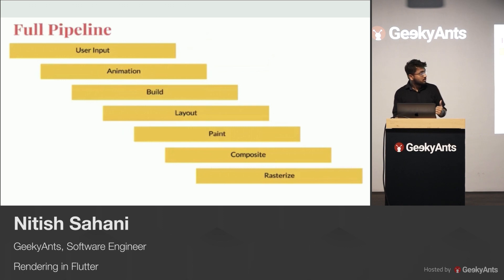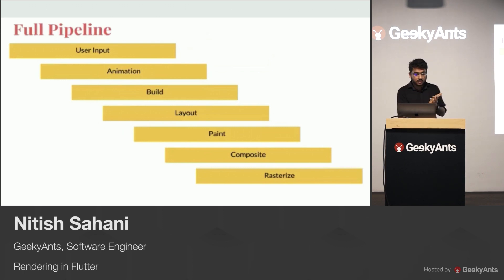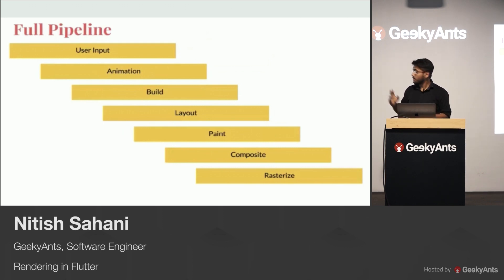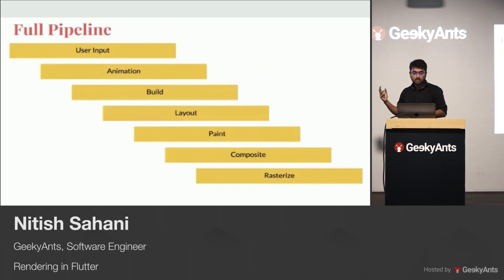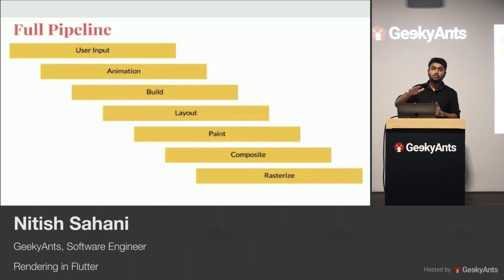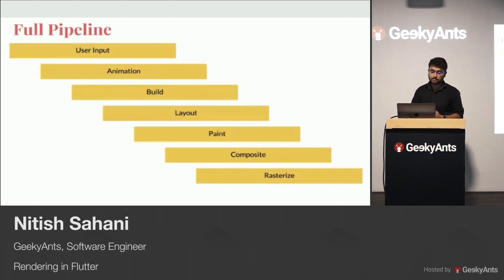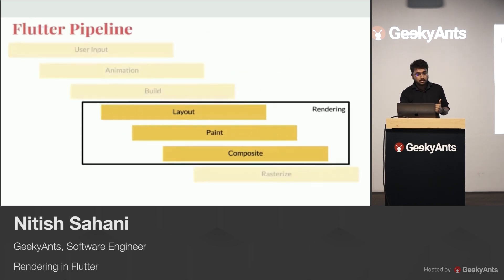This is the full Flutter pipeline of how things go step by step. Maybe you get some user input, then animations are running, then you get a chance to build widgets — that's the main part. Up till this point, the developer has control over the development of the app. But the magic happens after this. The rendering phase itself consists of three parts.